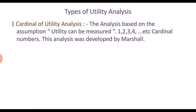In utility analysis, there are two types. The first one is cardinal utility analysis. This analysis is based on the assumption that utility can be measured — one, two, three, etc. These are cardinal numbers.